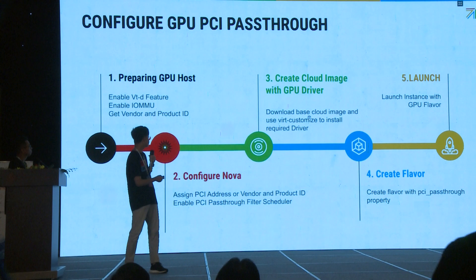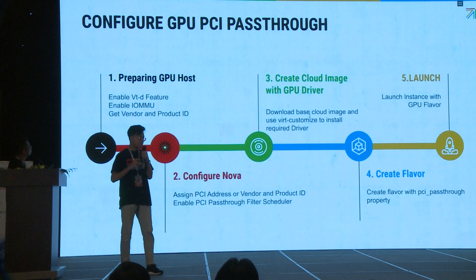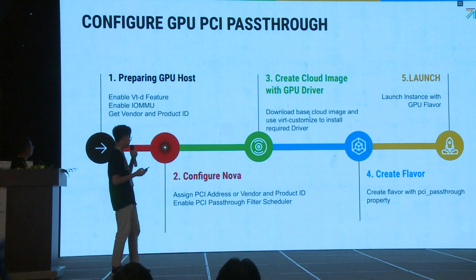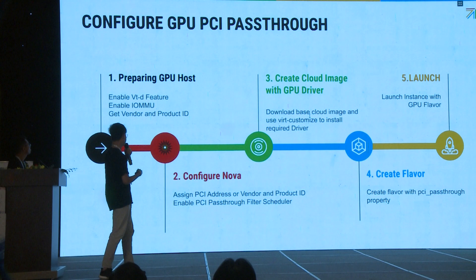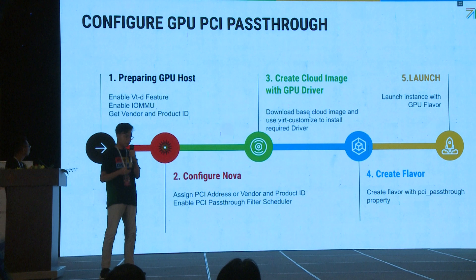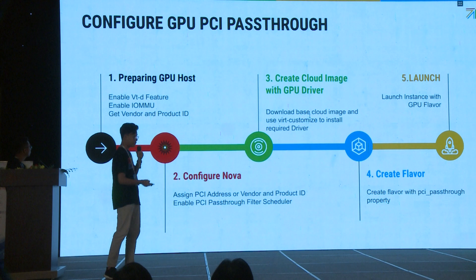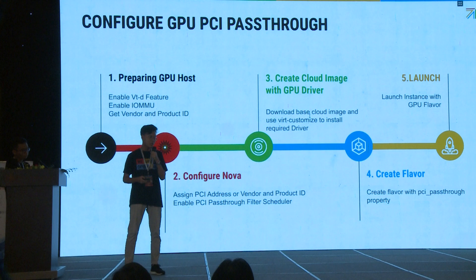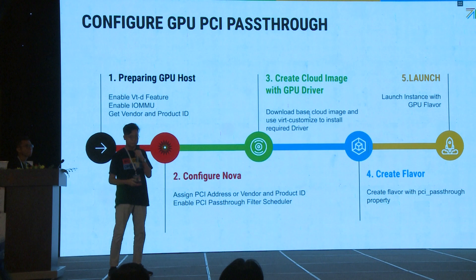Here is a summary of the steps to provide GPU pass-through to your OpenStack cluster. The first thing is preparing the GPU host and host operating system. Make sure you enable Intel VT-d or AMD-V so the CPU can pass-through I/O devices like PCIe. Then you have to enable IOMMU so your virtual machines can access RAM directly. Before the next step, collect the vendor and product OpenStack ID — NVIDIA and AMD each have their own IDs, which you can look up on the internet.